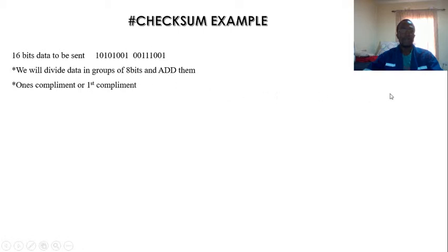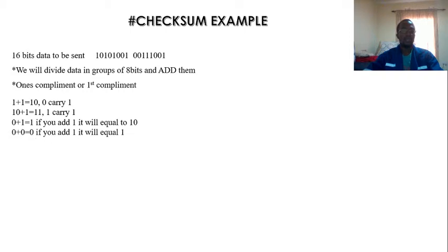Once we add these groups, here are the rules to follow: 1 plus 1 equals 10, write 0, carry 1. 10 plus 1 will be equal to 11, we write 1, carry 1. 0 plus 1 equals 1. If it was to carry somewhere, we add 1, it will be 10, so we write 0, carry 1. 0 plus 0 will be 0. If there is a carry somewhere, we add 0 plus 1, this will be 1.